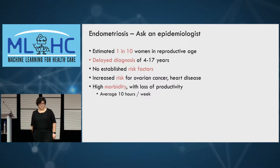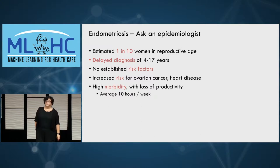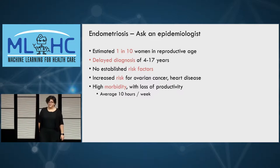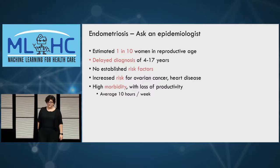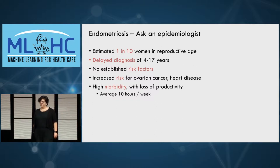Treatments would be surgical as well as hormonal in order to suppress menstruation. If you were to ask an epidemiologist, they would tell you that we think there are 1 in 10 women in reproductive age affected by the disease. We also know there is a delayed diagnosis between 4 and 17 years depending on the country. There's no established risk factors, and there's a high morbidity — on average 10 hours a week in lost productivity.